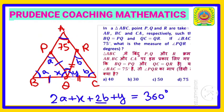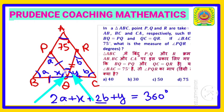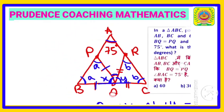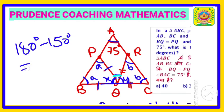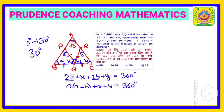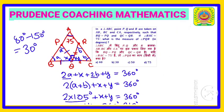We know X plus Y equals 150 degrees. Since BC is a straight line, all angles on it sum to 180 degrees. Subtracting X plus Y from 180 degrees gives us angle PQR equals 180 minus 150, which is 30 degrees. So the final answer is 30 degrees.